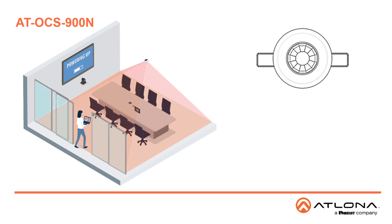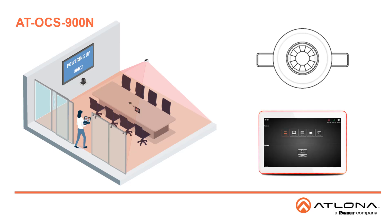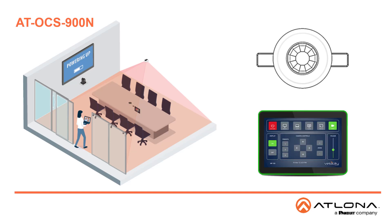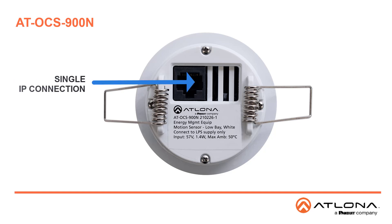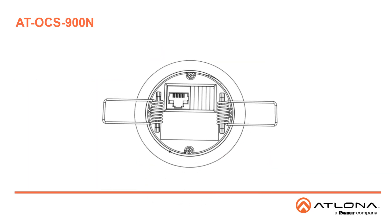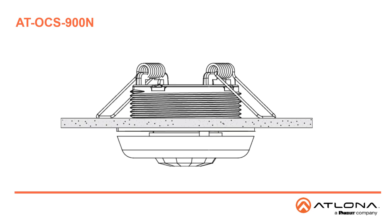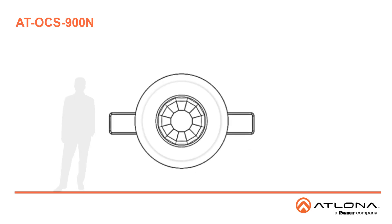The OCS900N utilizes an IP network to communicate with select Atlona products and our Velocity system to automatically control AV components based on whether the space is occupied. Installation is simplified by Power over Ethernet, which provides both communications and power over a single cable, as well as spring-loaded clamps that secure the sensor to a ceiling tile.